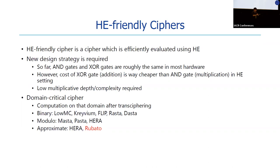HE-friendly ciphers are domain-critical: when the domain of the cipher is fixed, further computation after transcyphering is done on that domain. HE-friendly ciphers were first proposed for binary use cases — there are LowMC, Kreyvium, FLIP, Rasta, and Dasta. After that, it was known that modular ring is more appropriate for integer arithmetic and batching techniques for HE, so HE-friendly ciphers over modular ring have been proposed, such as MASTA, PASTA, and HERA. Finally, for approximate homomorphic encryption, HE-friendly ciphers have been proposed, and Rubato — what I'm talking about today — is in this case.